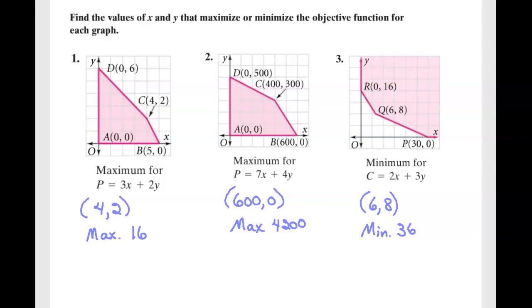So plugging them in, in number one we can see that the max occurs at the point (4,2), and then number three the min occurs at the point (6,8). And again we can find the min and maxes by plugging in the corners of the vertices and finding the largest value.